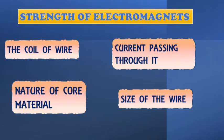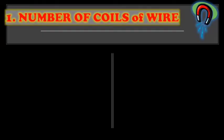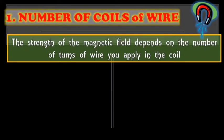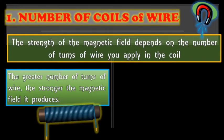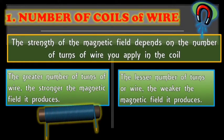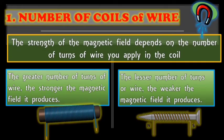Now, let's proceed to the factors affecting the strength of electromagnet. First of this is the number of coils of wire. The strength of the magnetic field depends on the number of turns of wire you apply in the coil. The greater number of turns of wire, of course, the stronger the magnetic field it produces. This means when you have more coils of wire wound around the electromagnet, it becomes stronger.